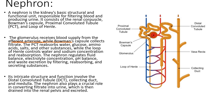A nephron consists of several components. First off is the renal corpuscle. The renal corpuscle is basically the initial part of the nephron, consisting of the glomerulus and the Bowman's capsule.